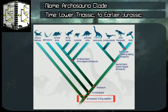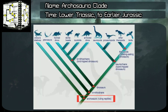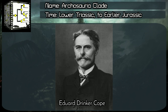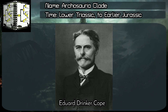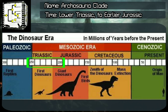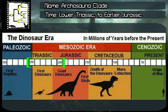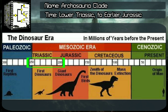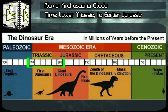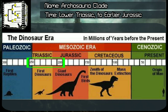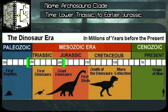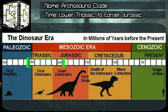Introduction: Archosauria clade, classified by Edward Drinker Cope, year 1869. Time range: Phanerozoic Aeon, Mesozoic Era, Lower Triassic Period to the beginning of the Jurassic Period, something around 250 to 200 million years ago.